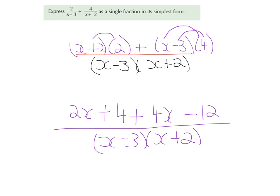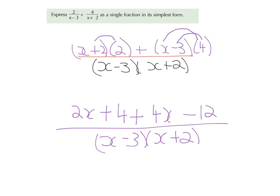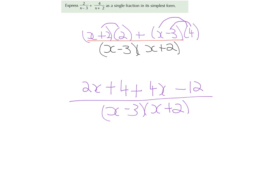I'm going to tidy up. So I have two x and a four x. That gives me six x. And four minus twelve gives me minus eight. So I've six x minus eight, all over x minus three times x plus two.